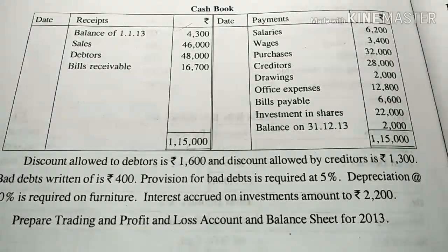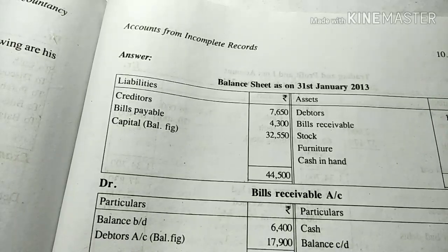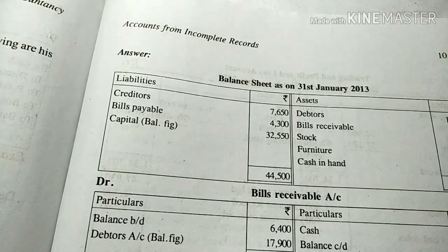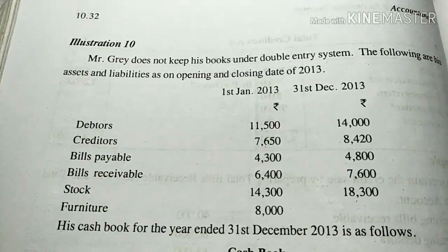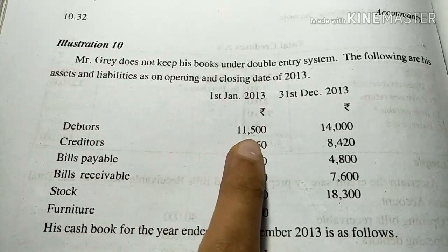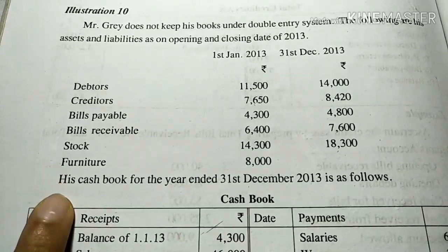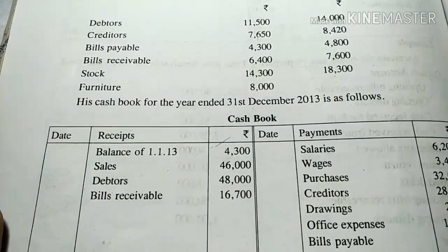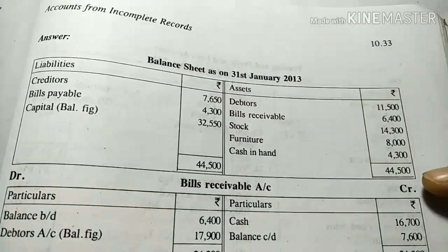This is the opening balance sheet dated 31st of December 2012. We are prepared for liabilities and assets. The debtor is in the opening balance. The bills receivable is $100 — that is an asset. The stock and furniture are both our assets. The opening balance of cash is $4,300, so we have assets of $4,300.